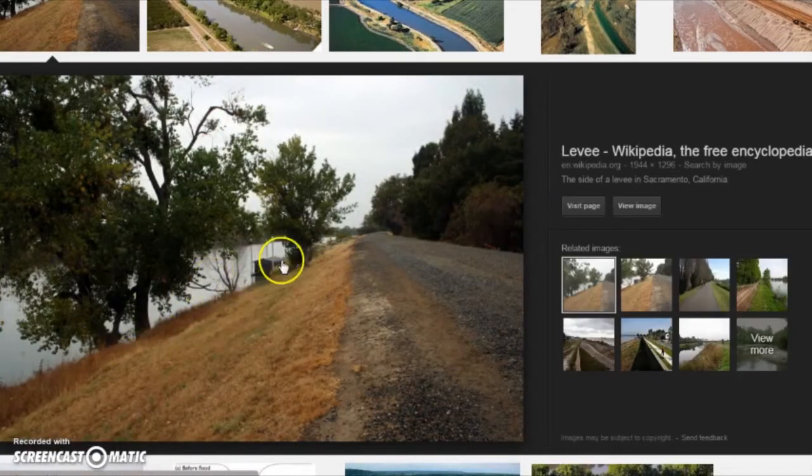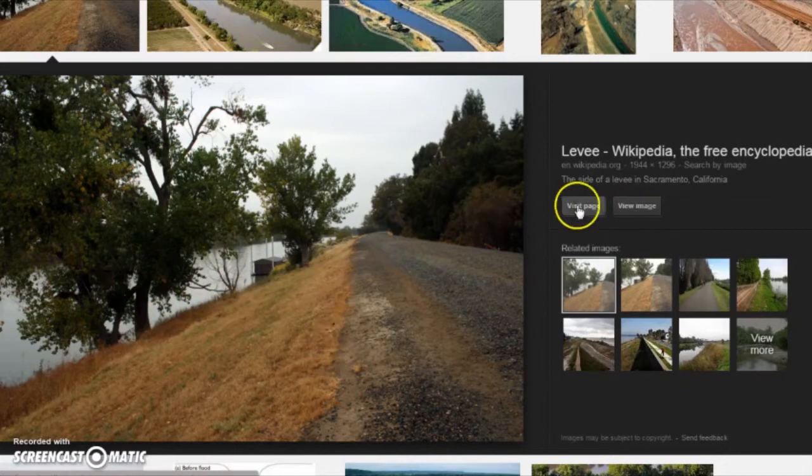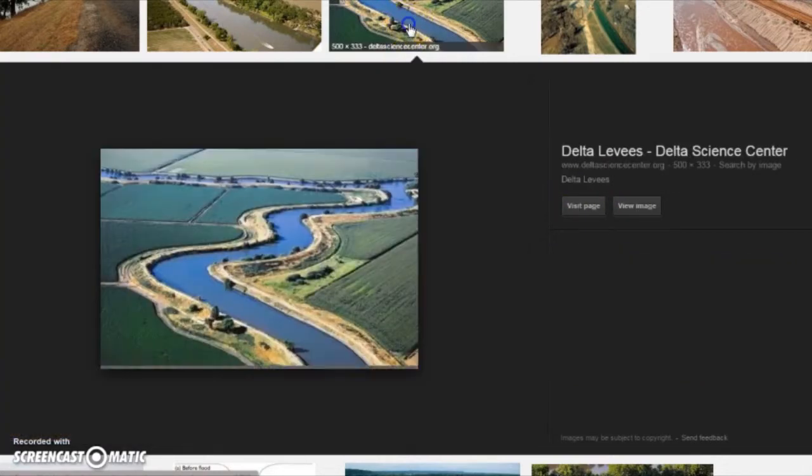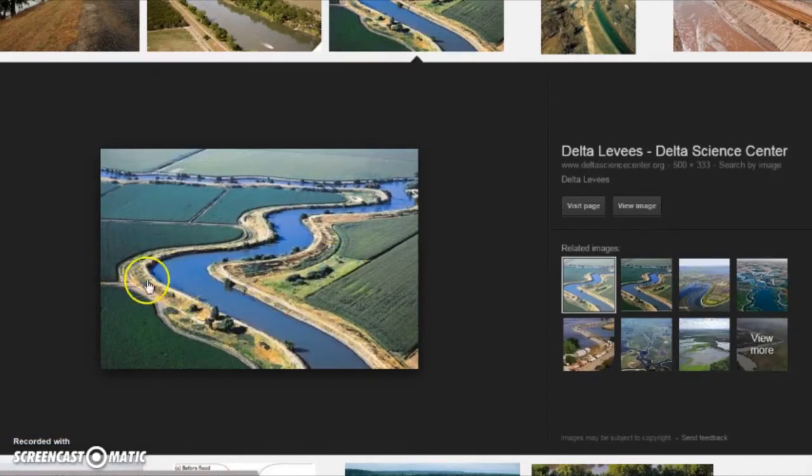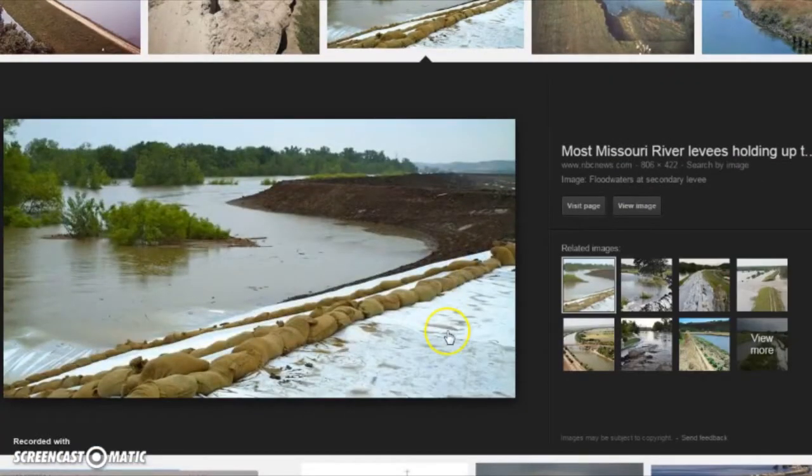So a levee is kind of like a hill or a mound designed to keep floodwaters from flooding an area. You can see this is kind of like a long mound. Here's a picture with long mounds that are going right along this river. Here's another example of some levees. This one was made taller by sandbags.